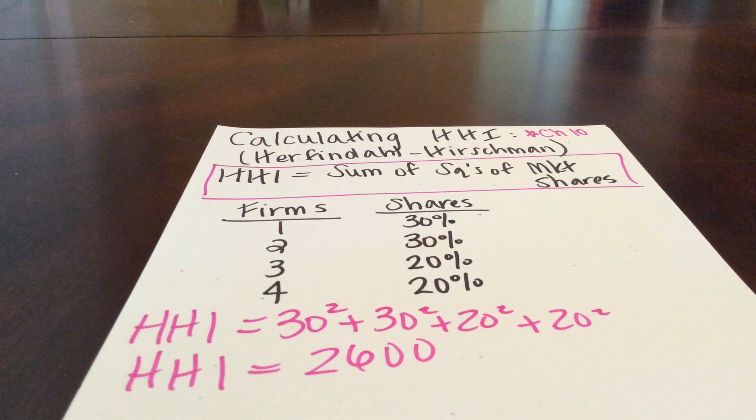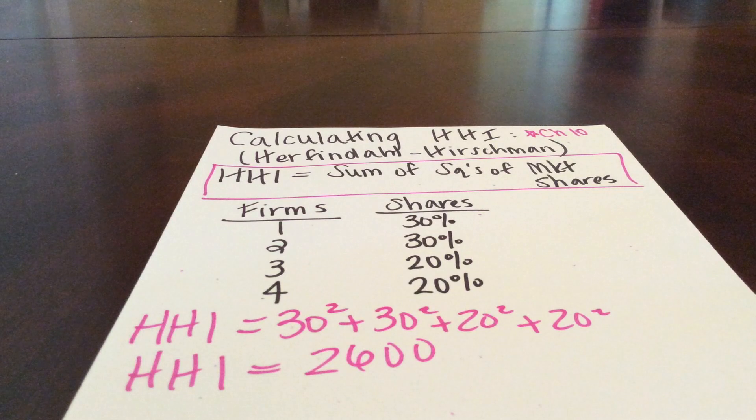And as the HHI gets smaller, as it approaches zero, then the market would be adding more and more firms that would be relatively similar size to one another.